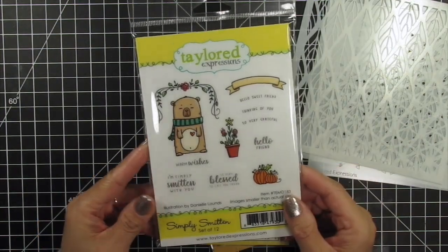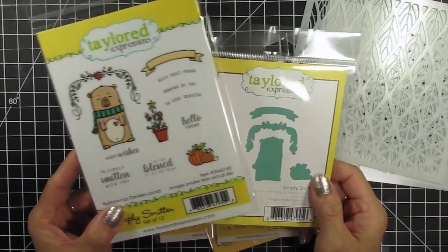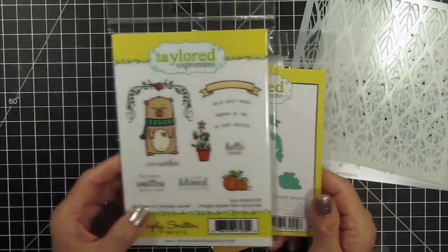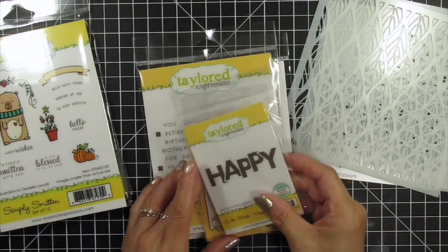In addition to the stenciling, I'll be using a few different stamp and die combos. The first one is Simply Smitten. I just love this cute little bear and his fall accessories.